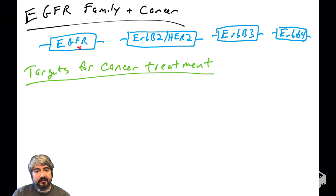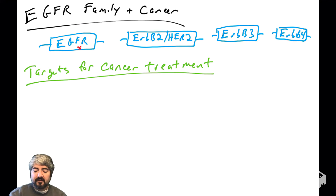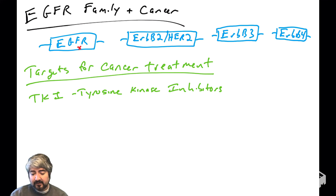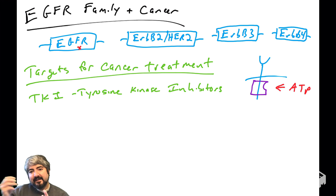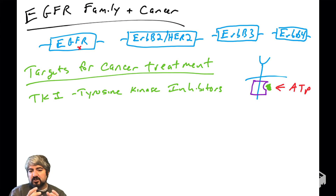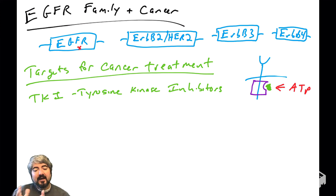Now let's talk about treatments that target this pathway in human cancers. There are two main categories of pharmaceutical compounds. The first are tyrosine kinase inhibitors. Three of the four EGFR family members are receptor tyrosine kinases with a tyrosine kinase domain that binds ATP, then transfers the phosphate to the dimer pair tyrosine, signaling the cell to proliferate. Tyrosine kinase inhibitors typically bind that ATP binding pocket — they mimic ATP — and either as competitive or non-competitive inhibitors, they prevent ATP from binding, so the kinase cannot phosphorylate its substrate.